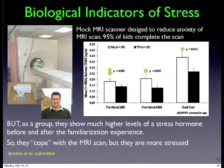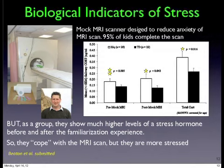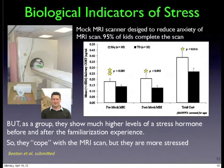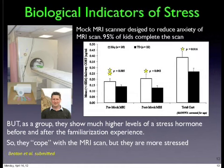Elliot will tell you more about this work. This is a pretend MRI scanner where kids practice before doing the real one. About 95% or more of our kids go through the MRI scan just fine. But how is their stress coming out? We measure cortisol — a stress hormone — from saliva before and after. Kids with a 22Q deletion show much more of that stress hormone than typical kids, even though they're doing the scan just fine. The biology tells us they're more stressed, even though they're coping.